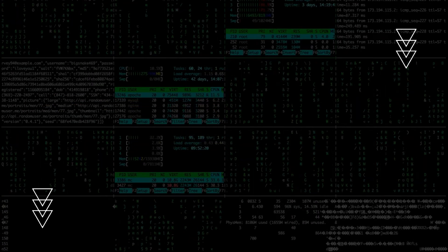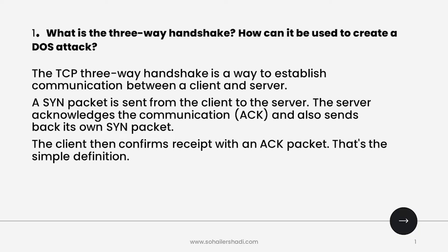The first question is: what is the three-way handshake and how can we use it to create a DoS attack? The interviewer is trying to understand your knowledge of networking fundamentals, because TCP/IP and the three-way handshake are fundamentals of networking. The TCP three-way handshake is a way to establish communication between a client and server. A SYN packet is sent from the client to the server, the server acknowledges and sends back its own SYN packet, and the client then confirms receipt with an ACK packet.